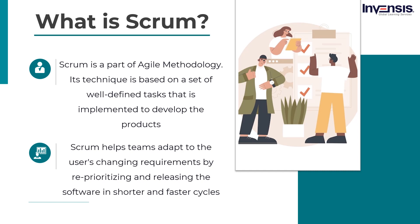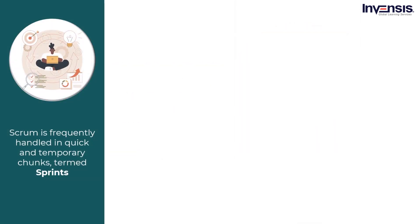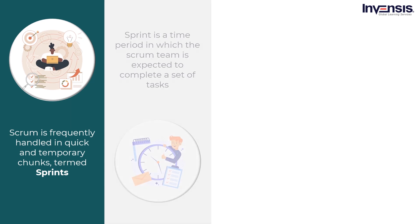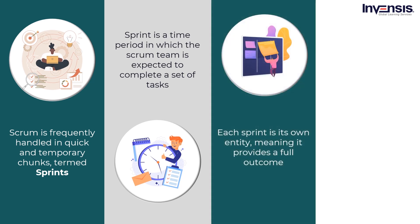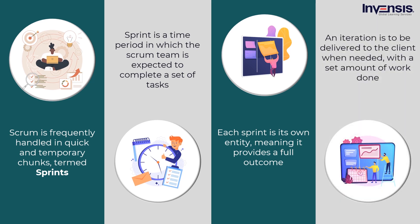Scrum can also be known as a methodology for handling complex adaptive problems while creatively and productively building and delivering high-value products. Scrum is frequently handled in quick and temporary chunks, termed sprints. A sprint is a time period usually spanning from two to four weeks, in which the Scrum team is expected to complete a set of tasks. Each sprint is its own entity, meaning it provides a full outcome — an iteration or variant of the final product — to be delivered to the client when needed, with a set amount of work done.